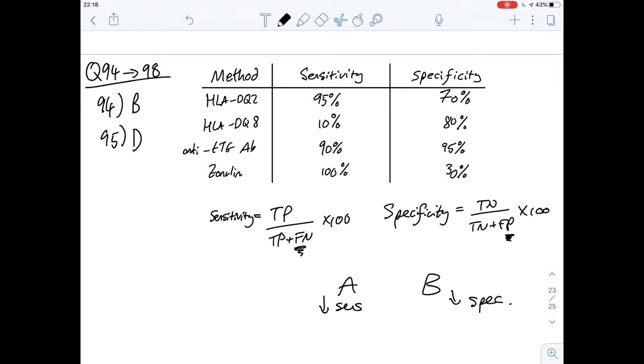So with HLIDQ8 we would expect it to have a lower sensitivity than with zonulin if that would be correct and of course the sensitivity of HLIDQ8 is 10% and in zonulin it's 100% so it would produce more false negatives than zonulin so that's correct.